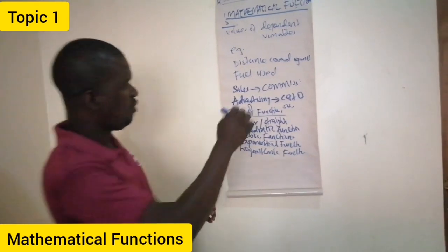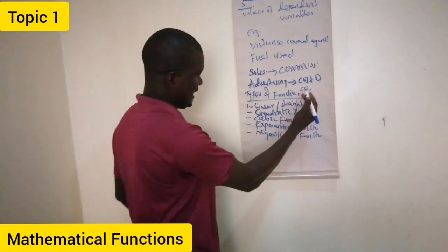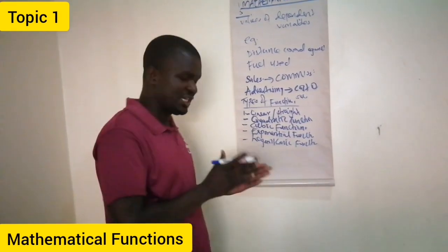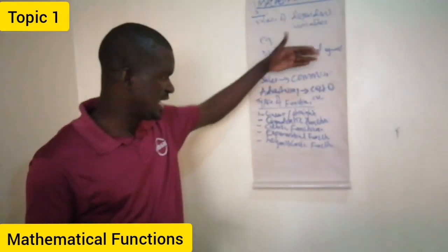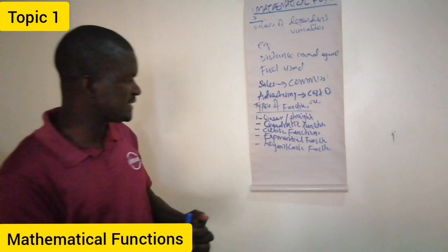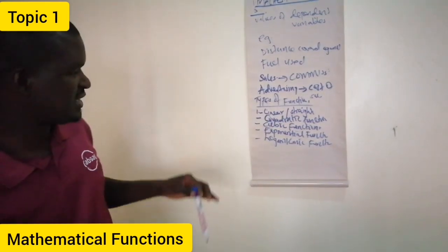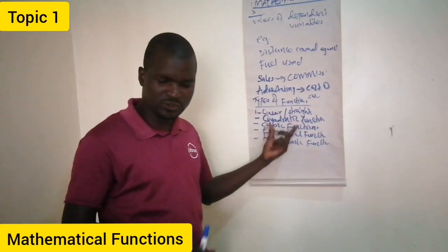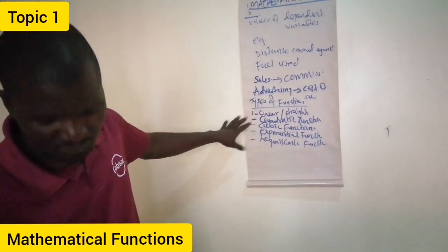When we talk about a linear function, it is generally in the form y = mx + c, as we shall look at later. It is a straight-line equation — we will examine what the different variables are. Then for quadratic functions, this is a function whose variable is raised to the power of two.